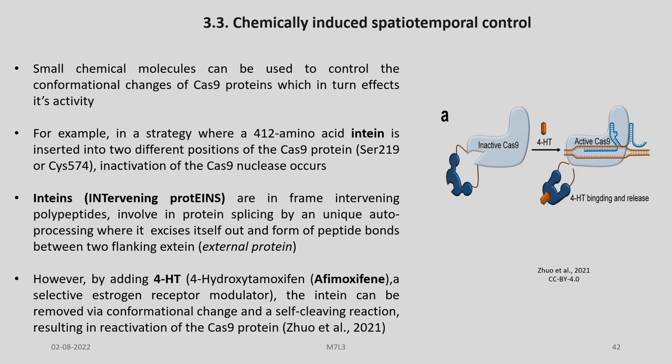Small chemical molecules can be used to control the conformational changes of Cas9 proteins which in turn affect its activity. In one strategy, a 412 amino acid intein is inserted into two different positions of the Cas9 protein — residues 219 and 657 — causing inactivation of Cas9. Inteins, or intervening proteins, are in-frame intervening polypeptides involved in protein splicing via a unique auto-processing mechanism where they excise themselves and form peptide bonds between two flanking exteins. By adding 4-HT, a selective estrogen receptor modulator, the intein can be removed by a conformational change and self-cleaving reaction, resulting in reactivation of Cas9.